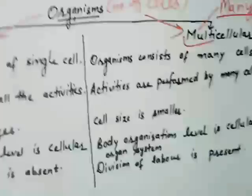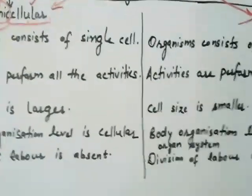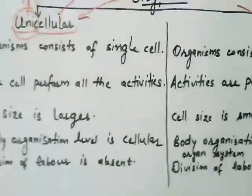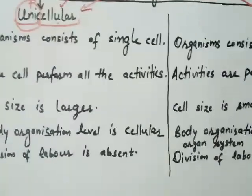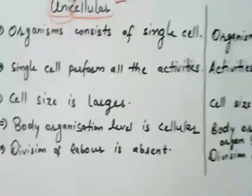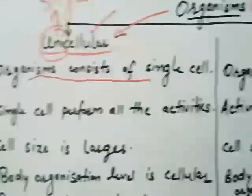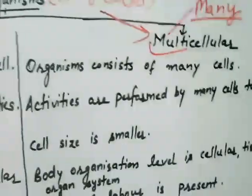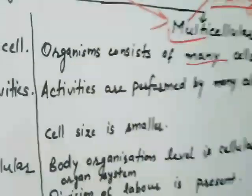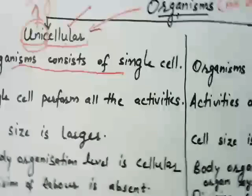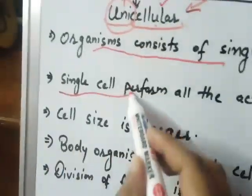I have discussed the basic difference between unicellular and multicellular organisms so that you can get this concept very easily. Let's start with unicellular — the organism is made up of one cell. The first point is that the organism consists of a single cell, and since there is only one cell, that single cell has to perform all the life activities.